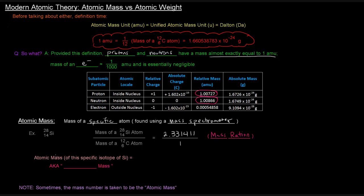And what we'll end up getting is 2.331411 over 1. And that kind of makes sense. It's a value a little bit larger than 2. 28 divided by 12 is a little bit more than 2. So this number should make sense. So the atomic mass of this specific silicon isotope, otherwise known as the isotopic mass, isotopic mass, because we're talking about the mass of this specific isotope of silicon. Not silicon-29, or silicon-30, or silicon-27. We're talking about silicon-28, specifically.